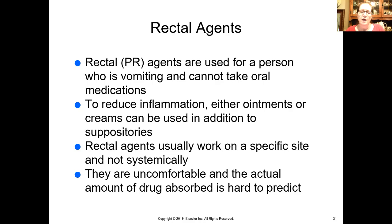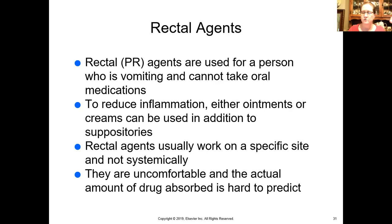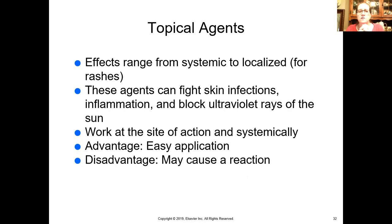Rectal agents usually work on a specific site rather than systemically, though sometimes they can be absorbed systemically — that's where you get the belladonna and opium suppository. Patients are uncomfortable using them not because of physical pain, but because they don't want to place things in the rectum. The amount of drug absorbed is hard to predict because waste in the rectum can coat the wall and prevent absorption, sometimes requiring a laxative suppository first. Topical agents go on top of the skin and can have either a systemic effect or a localized effect — they can fight skin and foot infections, inflammation, or block UV rays like sunscreen.